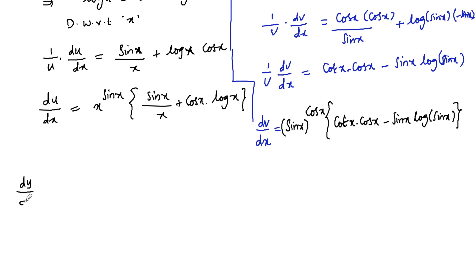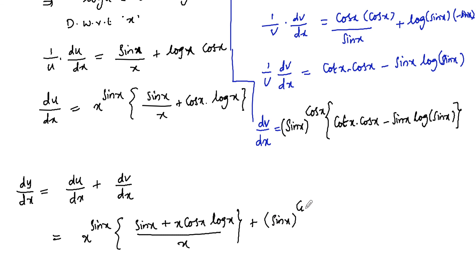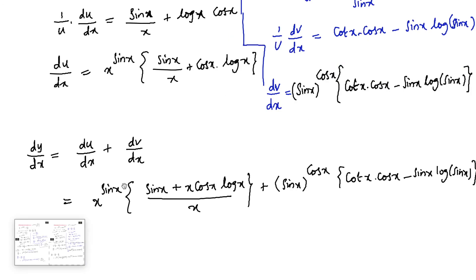Now dy/dx = du/dx + dv/dx. So dy/dx = x to the power of sin x into (sin x upon x + cos x into log x) plus sin x to the power of cos x into (cos x · cot x minus sin x · log of sin x). This is the answer. We can also simplify by writing x to the power of sin x minus 1 by dividing x. Thank you.